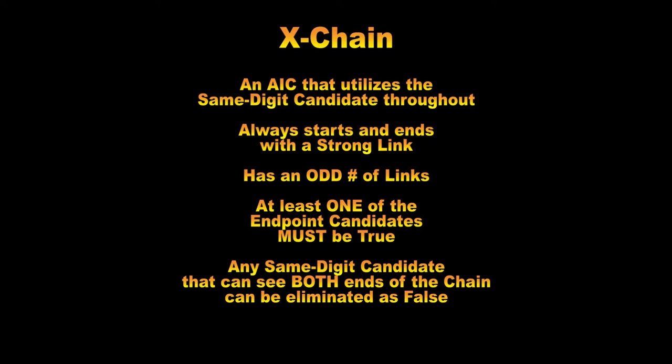We know that in any AIC, a strong link can be used in the role of a weak link because it has the properties of both. So these chains can also be constructed strong, strong, strong, and it works just the same. The first and third links must be strong — they must be conjugate pairs — but the middle link can be either weak or strong. Because of the inferences of those three links, we know with absolute certainty that if either end of the chain is false, then the other end must be true. This ensures that at least one of the endpoint candidates must be true, and any same-digit candidate that can see both ends of the chain must be false.